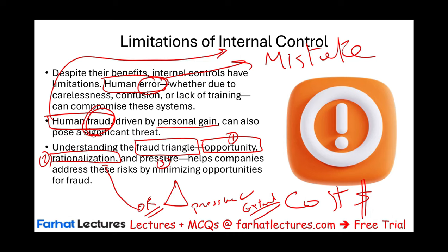Companies try to hire people with ethics, but they cannot control that — people change over time. Someone might be ethical for five, seven, or ten years and then change under financial pressure or new responsibilities. However, when it comes to the third component — opportunity — if you have proper internal control, it can eliminate the opportunity to commit fraud.